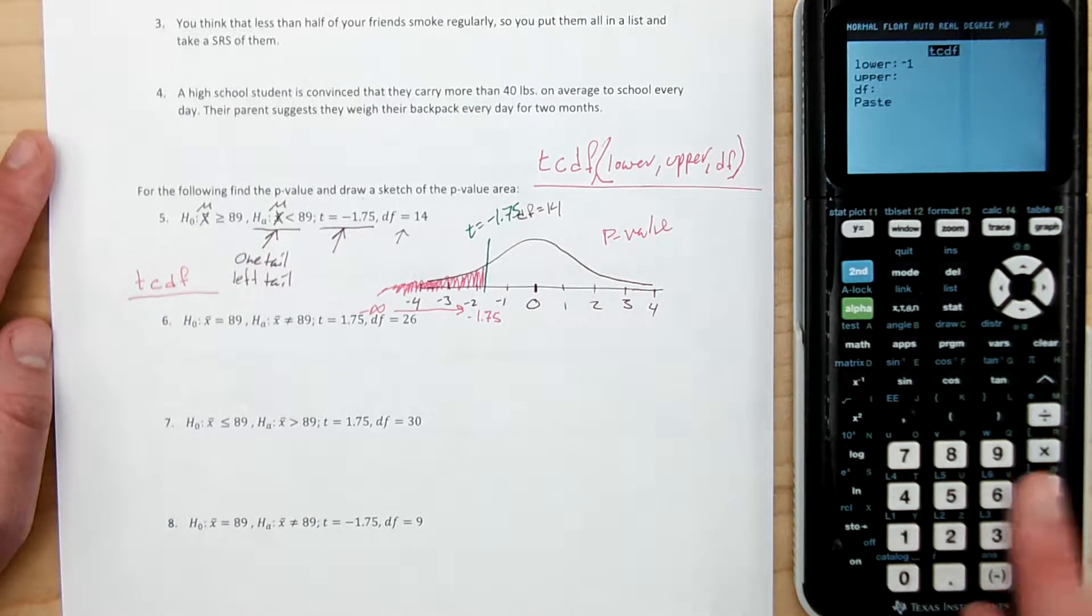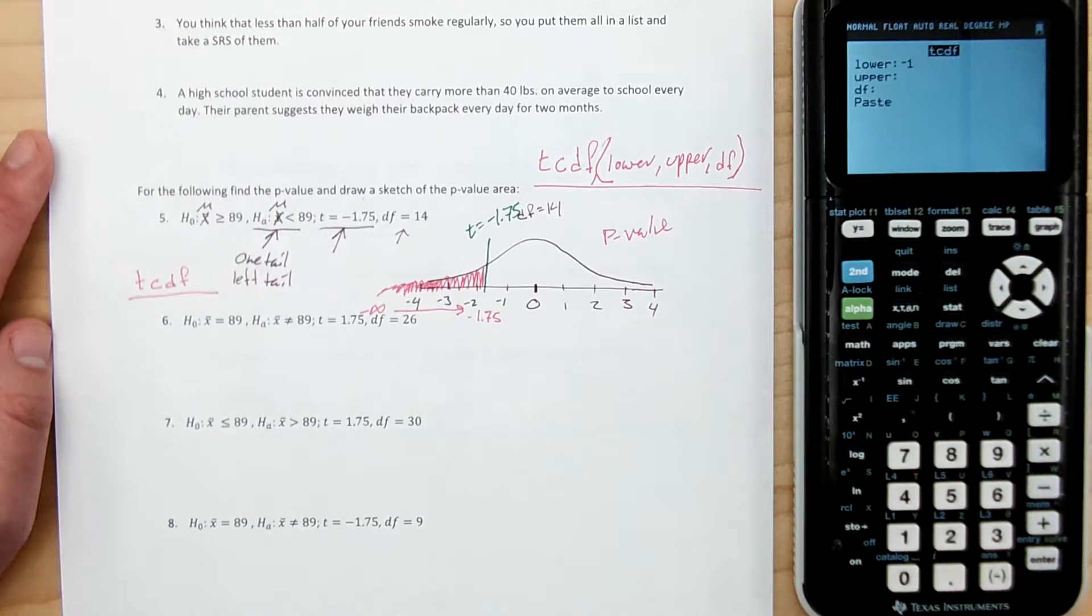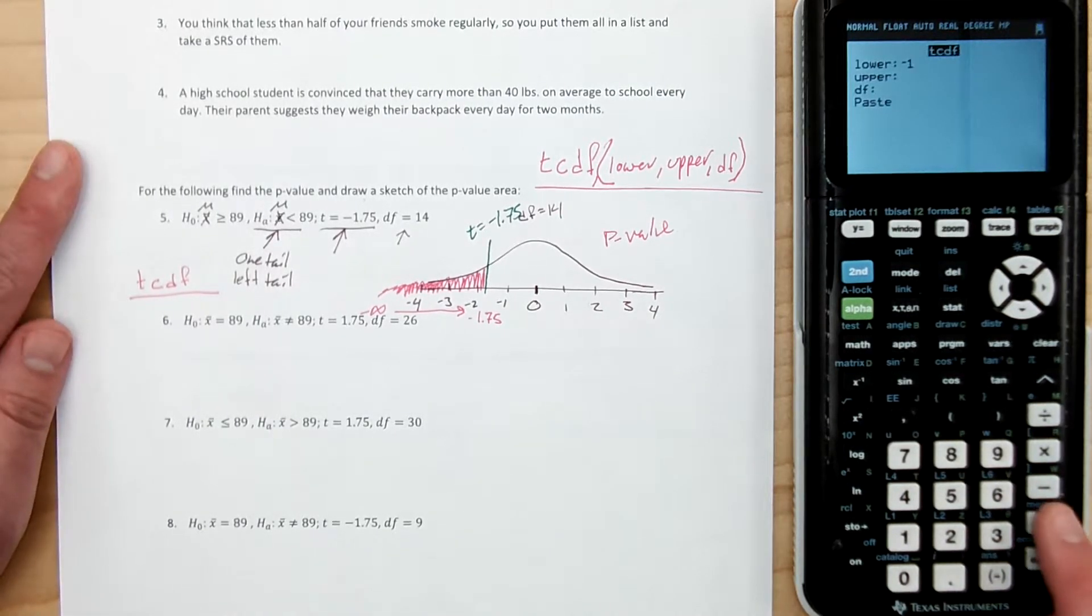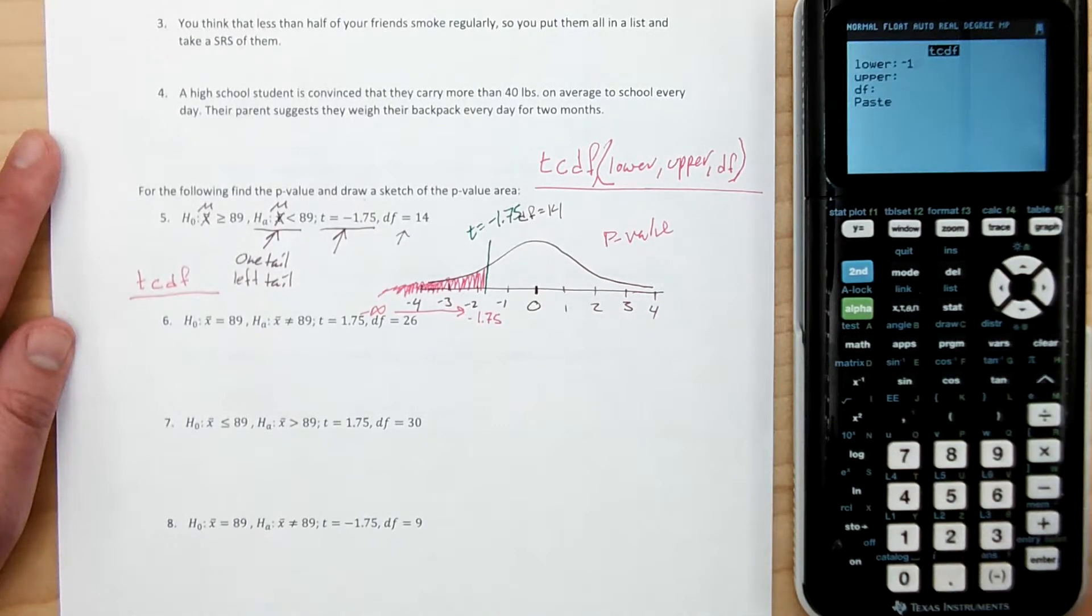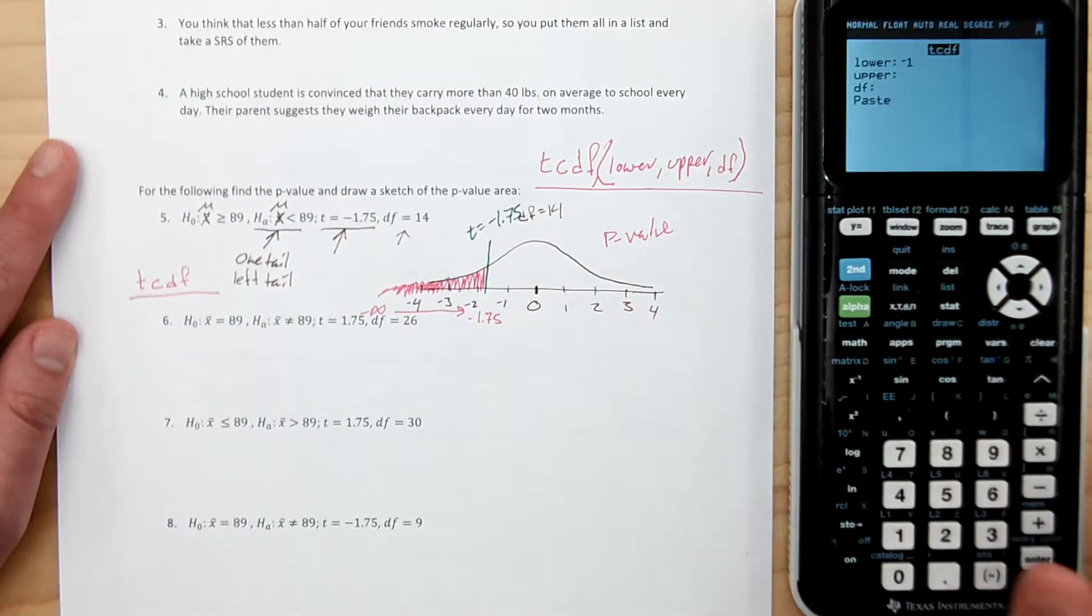If you accidentally press minus, when you go to, it's going to say syntax error. So if you get a syntax error, first thing that you should do is say, did I accidentally type minus instead of negative? Also look for, did I just put things—maybe I switched my upper and lower bounds. It doesn't like that. I think that might be error dimension when you do that, though.